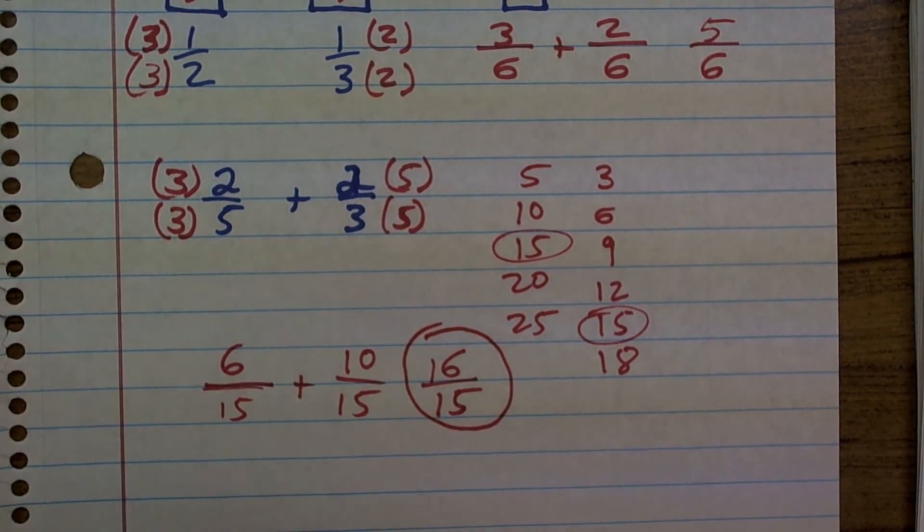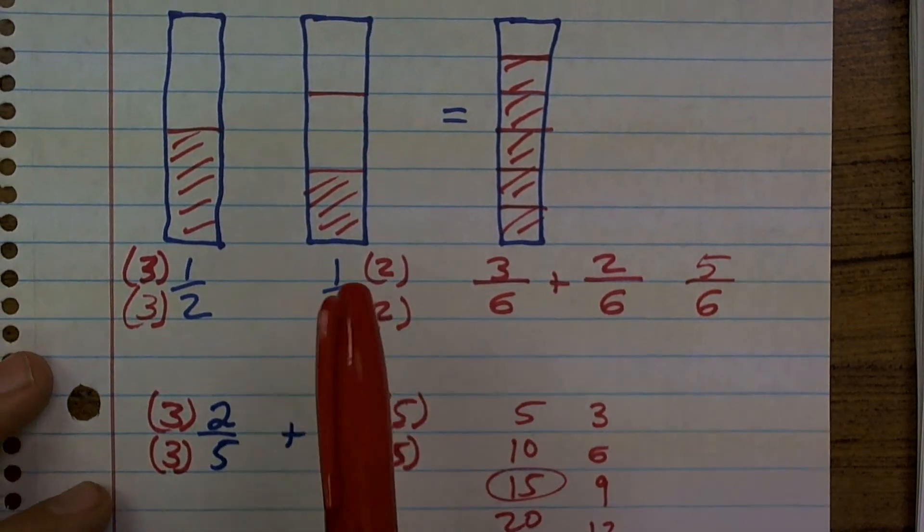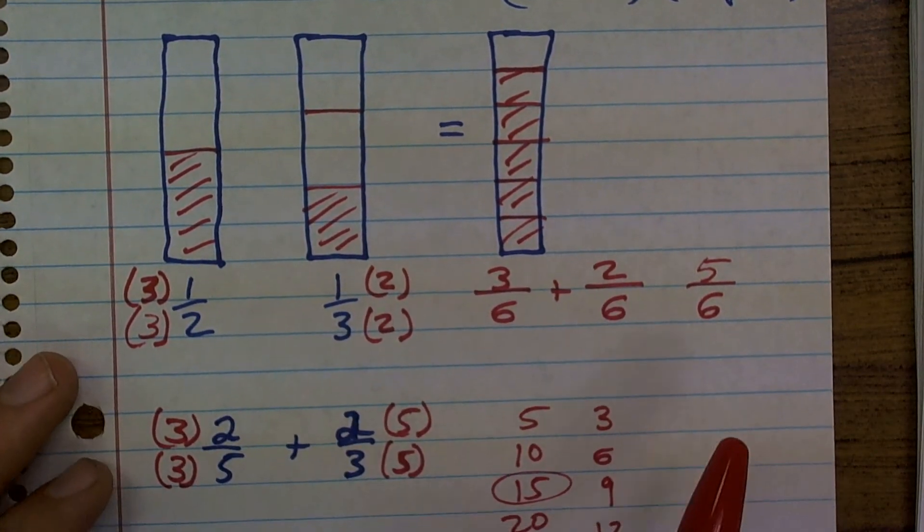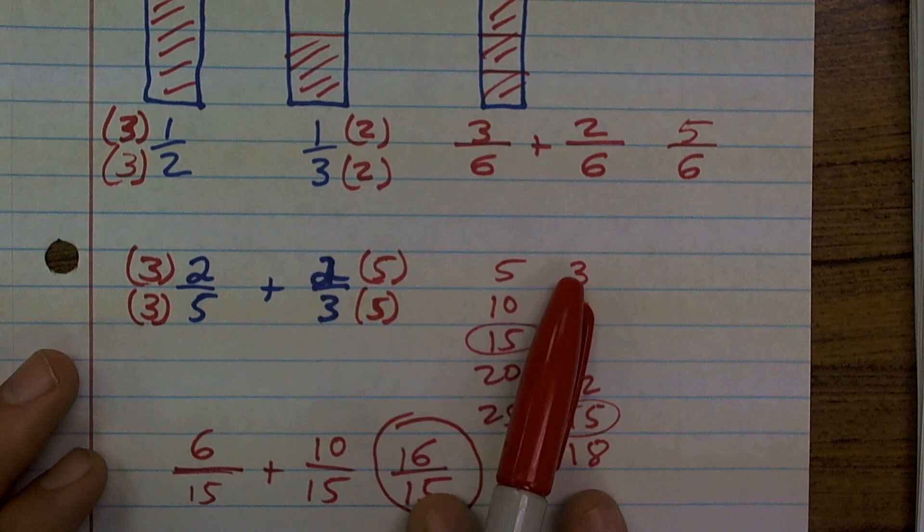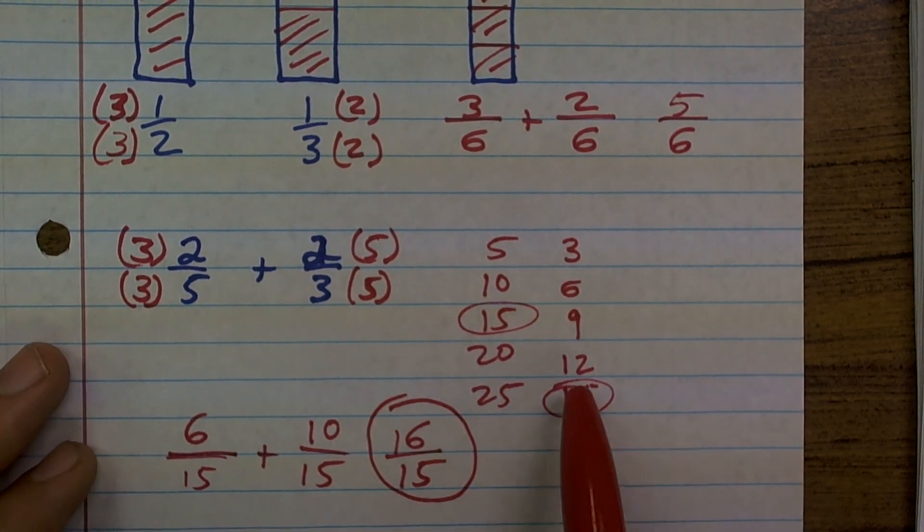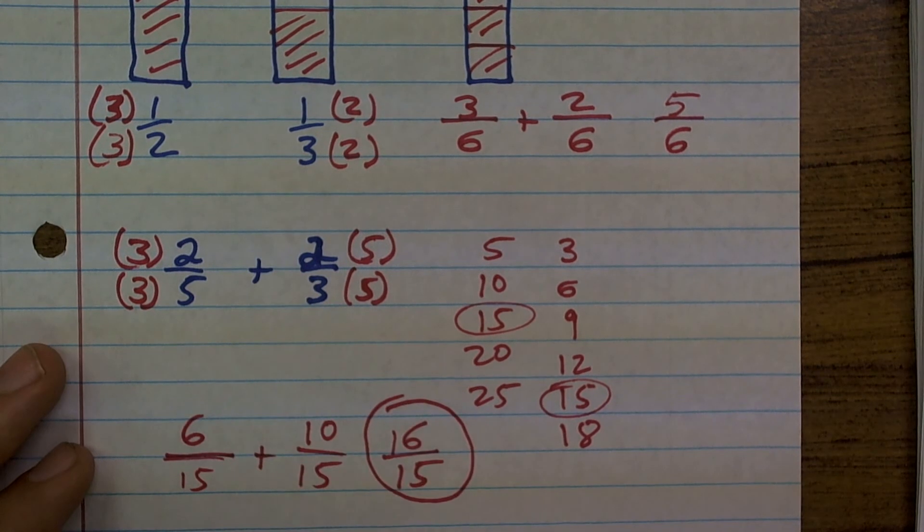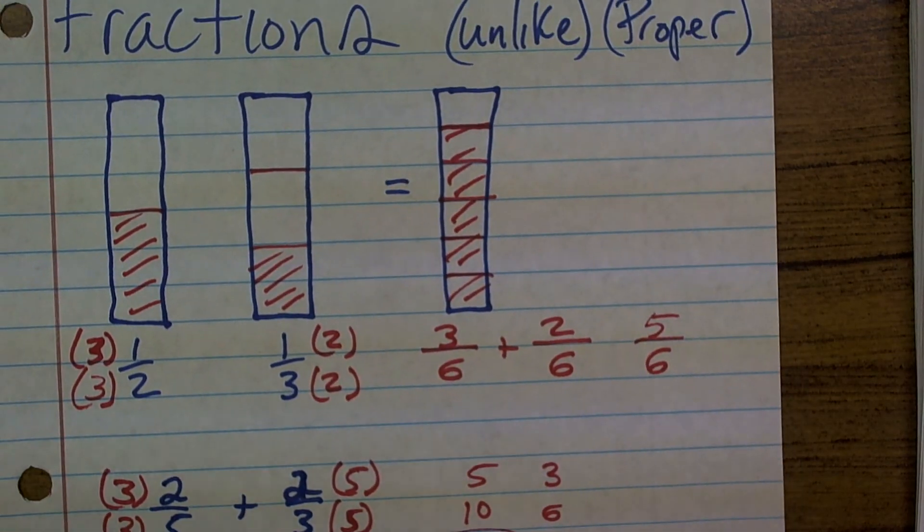So once again, ladies and gentlemen, that is how you add fractions when you have unlike denominators. Please, please, do not just simply add them up and try to pick a denominator. You have to find the common denominator by taking the multiples and seeing which multiple they share in common and then multiplying to get that multiple. Alright, there we go ladies and gentlemen.